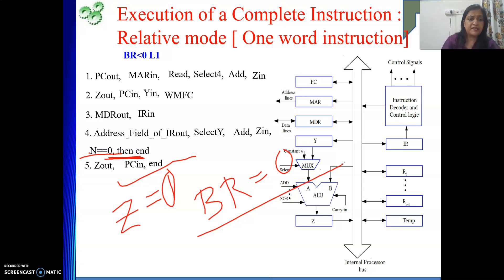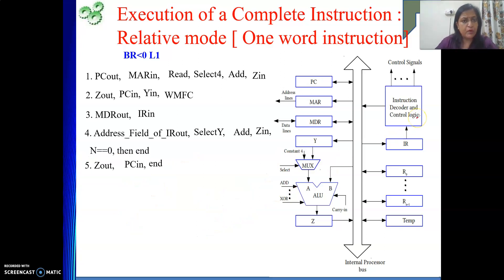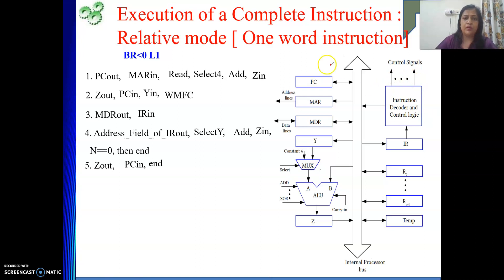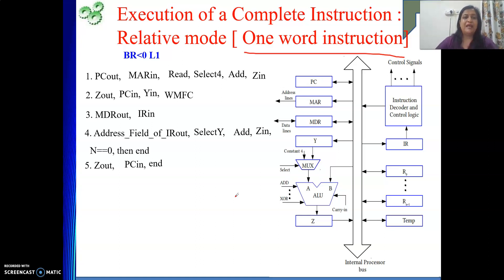Hope this part is clear. This is about relative mode. One more point to mention: in both examples, the offset part is within the instruction itself because the length of the instruction is one word. So this is all about relative mode. Hope you are getting the control sequence for relative mode instructions from my explanations. Thank you, and if you are getting value from my videos, please like and subscribe to my channel.